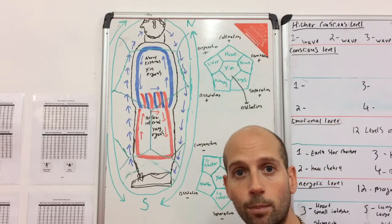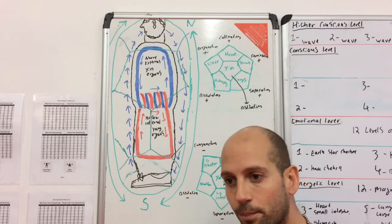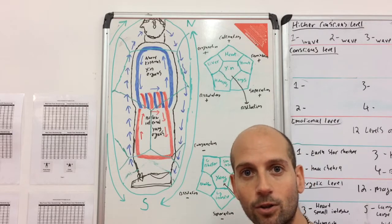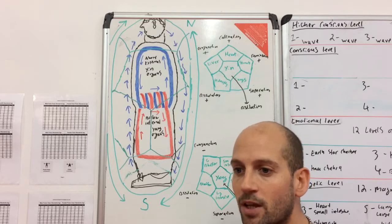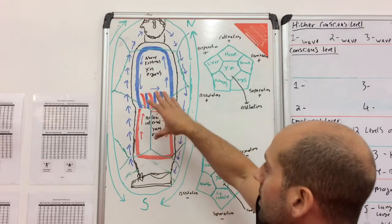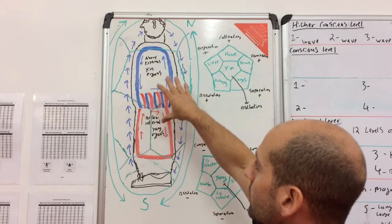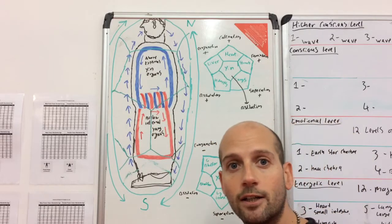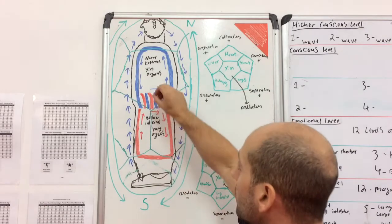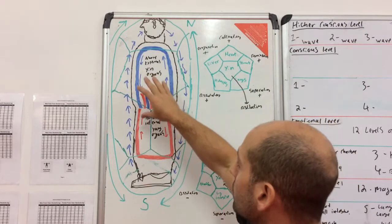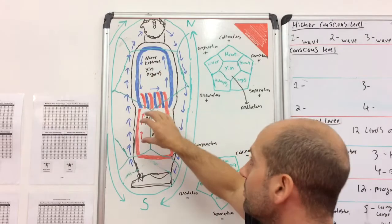That also pumps the blood through the body in a similar fashion using the heart. It brings air through the lungs through the pump action, and it also compresses and expands the organs in the body because the body is a vacuum — outside of the lungs it's a vacuum. So when this expands, all the organs in the upper cavity expand as well, and they contract when we breathe out. Same in the lower.